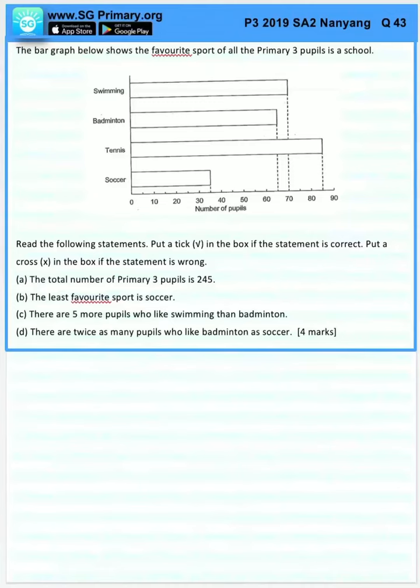Question 43. The bar graph below shows the favorite sport of all the Primary 3 students in a school. Tick if the statement is correct, cross if the statement is wrong. The total number of Primary 3 pupils is 245. So let's identify each bar first.